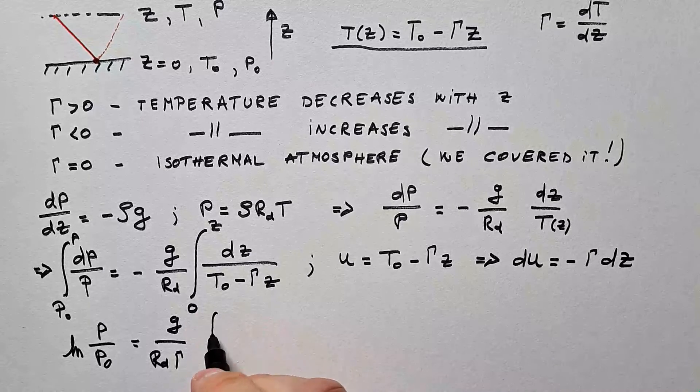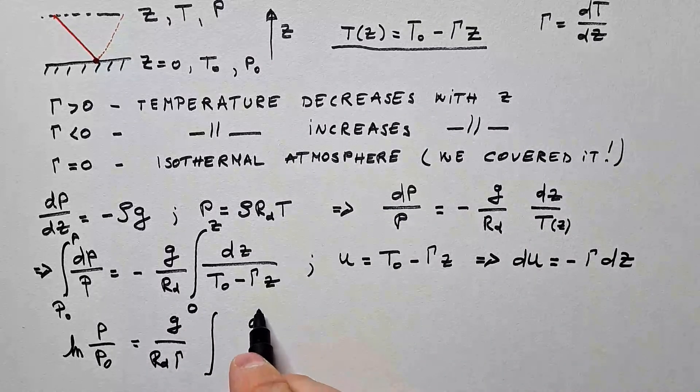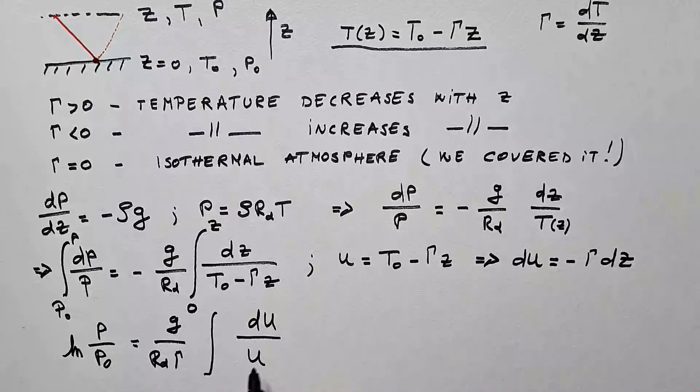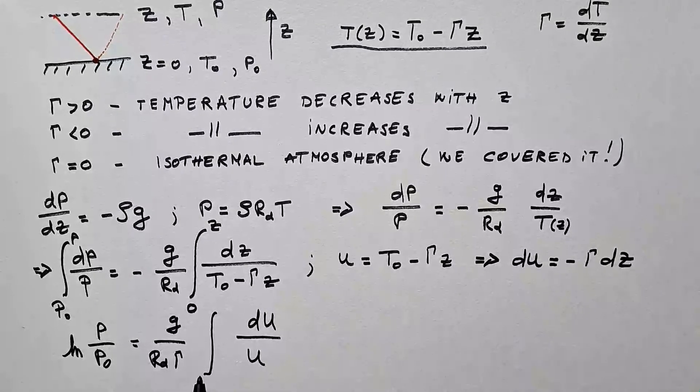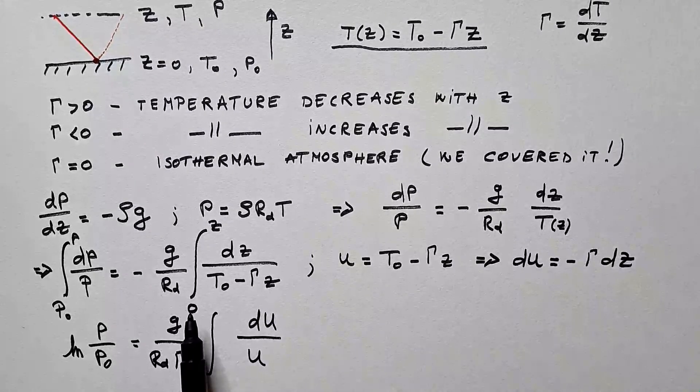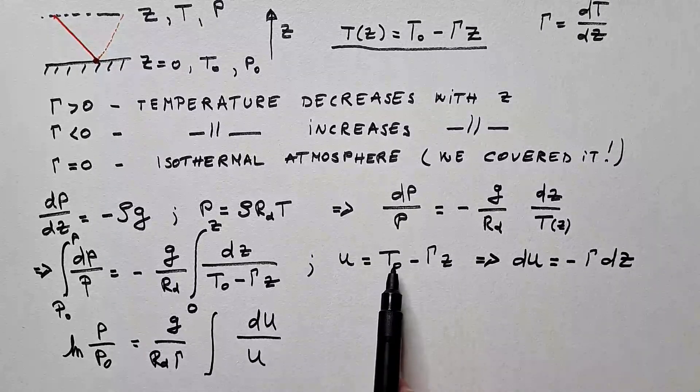Left side is simply logarithm P over P₀ equals... Notice that this minus will cancel with this minus, so I will have g over Rd, because dz is du over γ, so that γ is constant. It can go in front of the integral, and my integral becomes du over u.